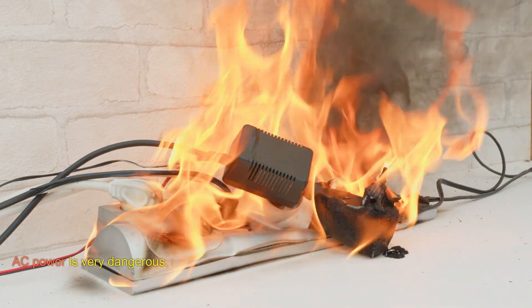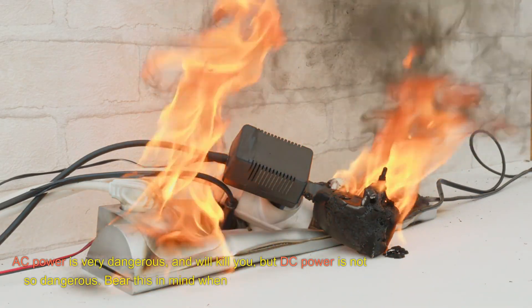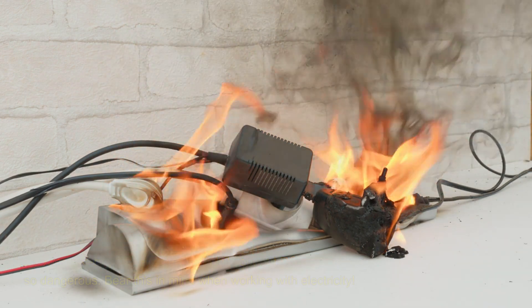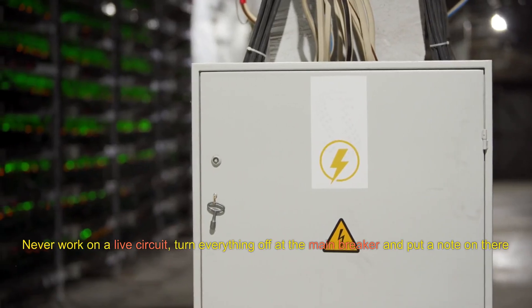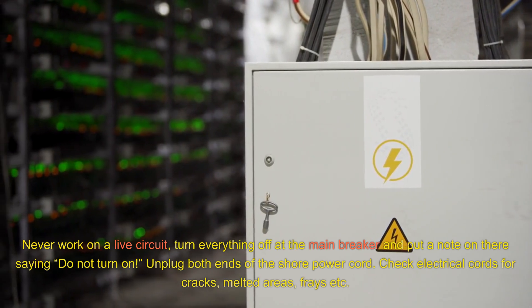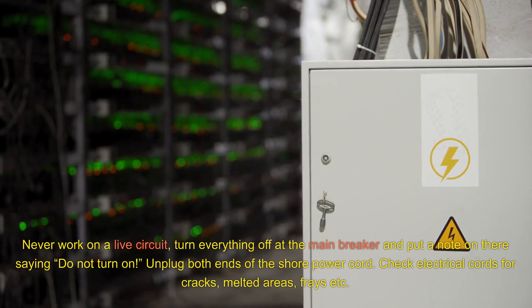Safety. AC power is very dangerous and will kill you, but DC power is not so dangerous. Bear this in mind when working with electricity. Never work on a live circuit. Turn everything off at the main breaker and put a note on there saying, 'Do not turn on.' Unplug both ends of the shore power cord.